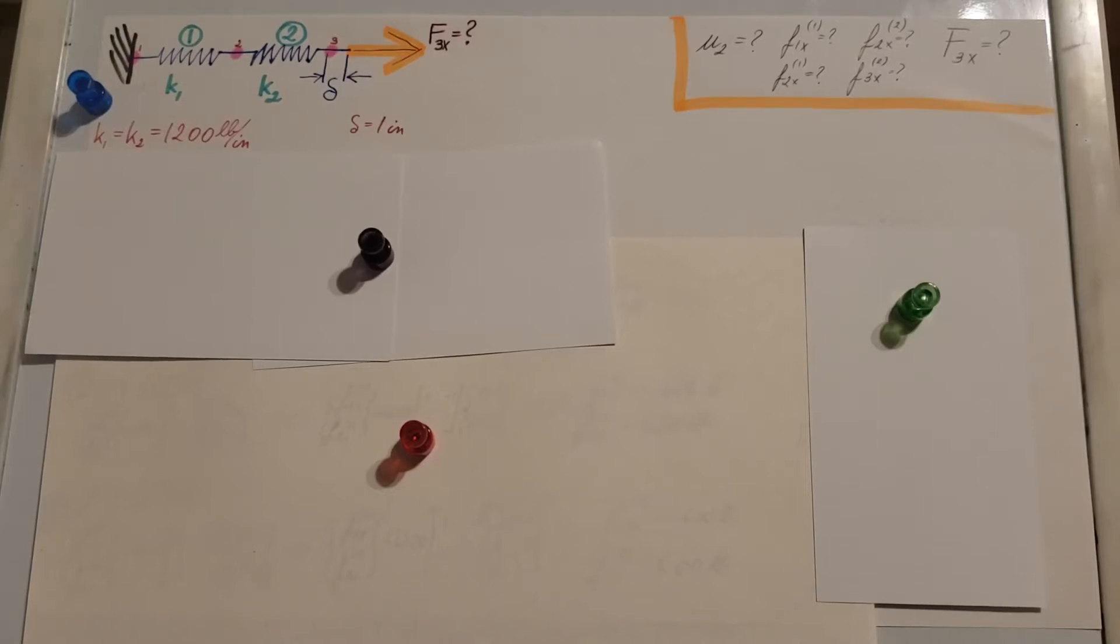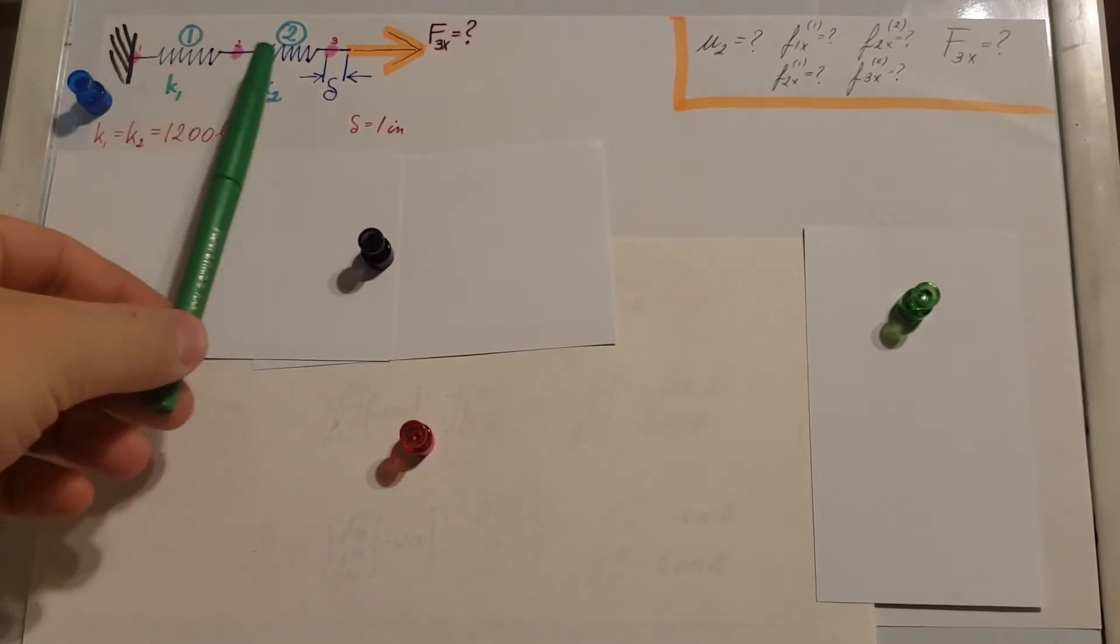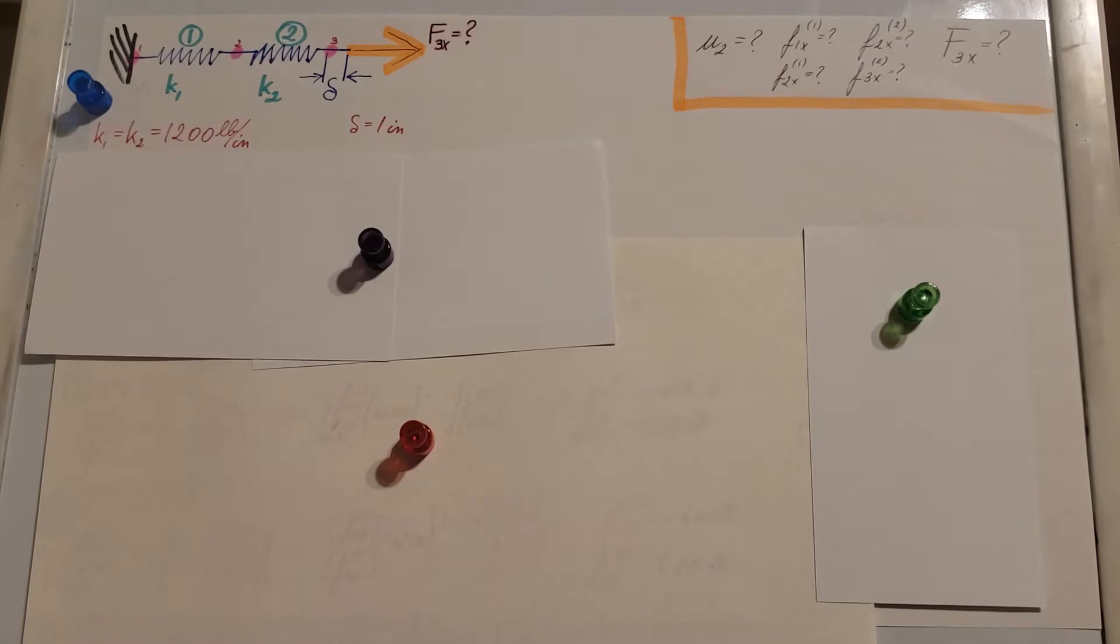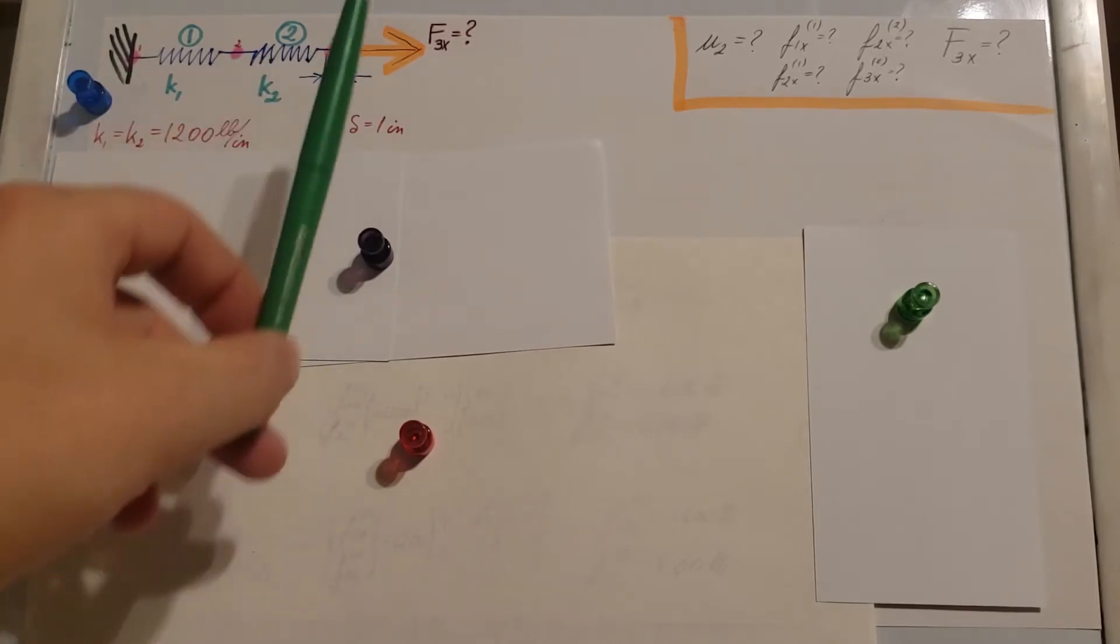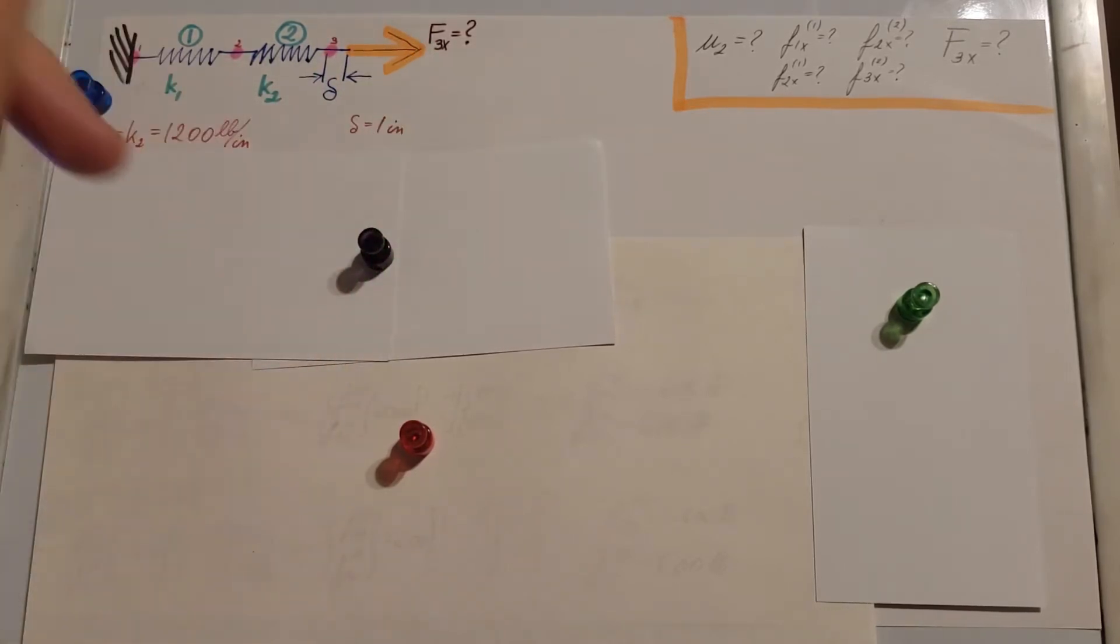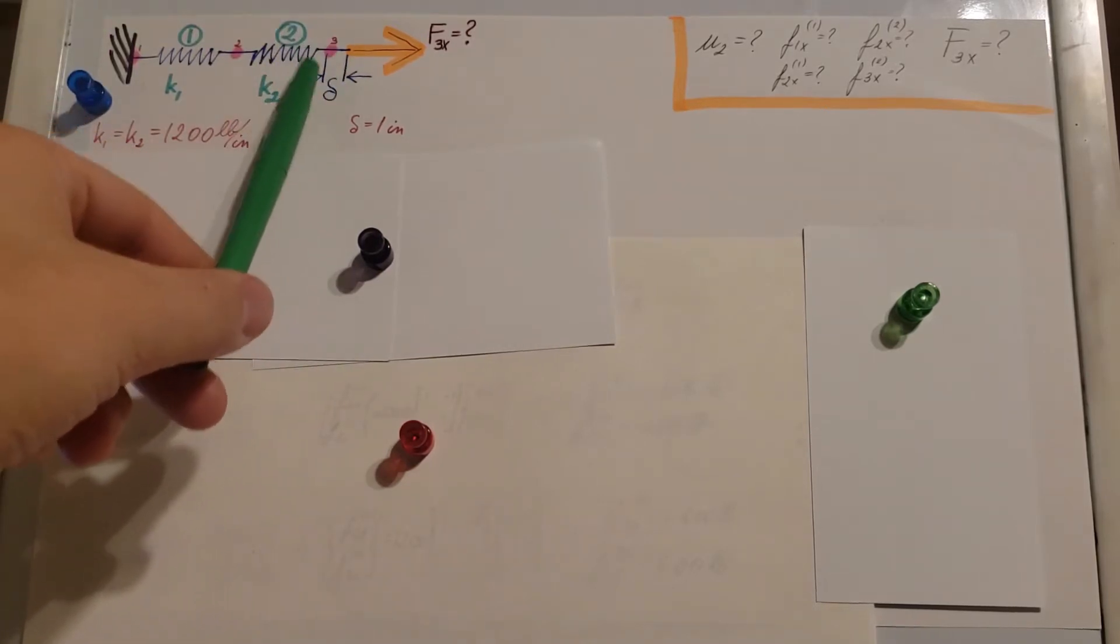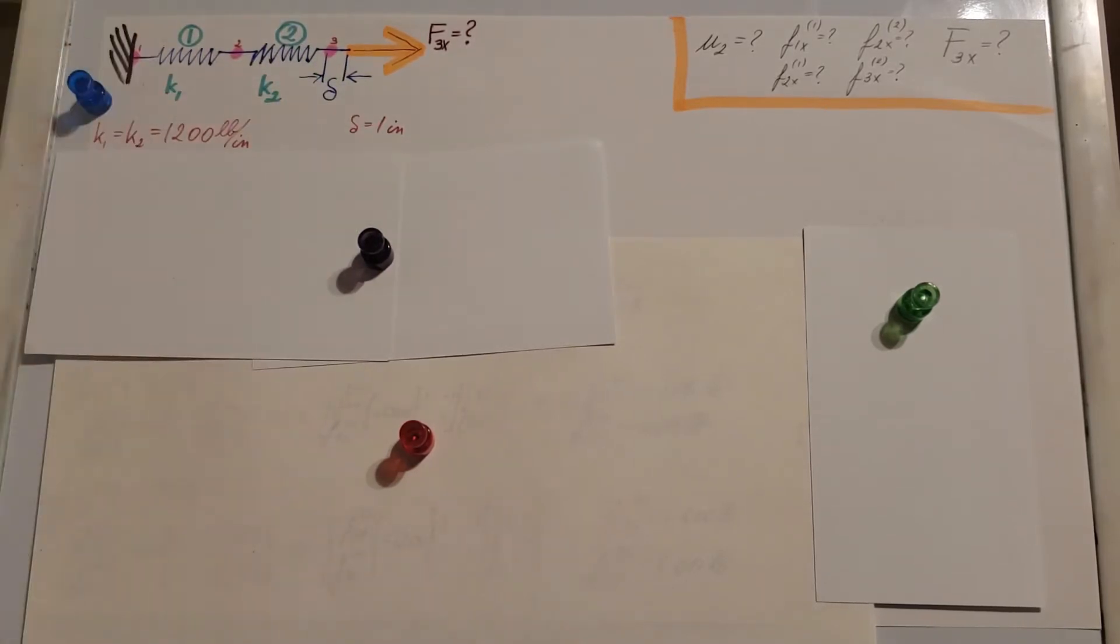This is a finite element problem, and we are working with a spring assembly that's shown right here. We have two elements that are represented with springs. They want us to find the displacement at node 2, the elemental forces for both elements, and this force F3 for an initial displacement that would be 1 inch.